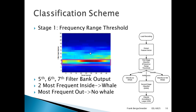Once we've computed the feature vector, we give it to the first stage classifier, which is the frequency range threshold classifier. We're looking for the components of the fifth, sixth, and seventh filter bank output, which represent the fundamental frequency of the right whale upcall. If the two most frequent maximum filter bank components are inside this range, we label the signal as a whale. If the most frequent filter bank component output is outside this range, we label the signal as not a whale. If it's ambiguous and neither condition is satisfied, it's passed to the second stage classifier, which is the Gaussian mixture model.